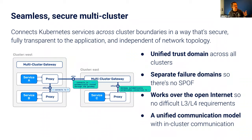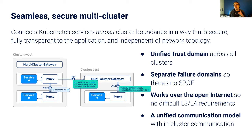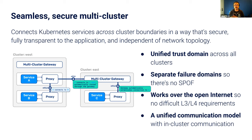In 2.7 or 2.8 we started adding multi-cluster capabilities, letting you sync services across clusters and route them through a gateway or ingress on another cluster. This works really well with traffic split — the application doesn't have to know where a service is hosted. You can even do weighted shifting transparently. There's no single point of failure, no centralized load balancer, and no special network requirements — you don't need a flat network where everything is addressable. This is really the first Linkerd extension, leveraging the Kubernetes API and Linkerd service discovery to make it work.